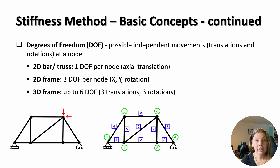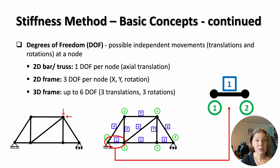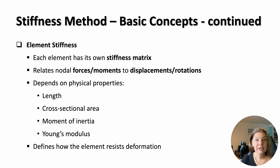Let's see what that means for the truss we saw on the slide earlier. Looking at the element between nodes 1 and 2, element 1 — this is a truss element, so it'll only have forces and displacements in the axial direction. One at node 1 and one at node 2, so two degrees of freedom in total for this element. Each element is represented mathematically by its stiffness matrix. This matrix defines the relationship between nodal displacements and nodal forces or moments. Its form depends on the element's physical properties — length, cross-sectional area, moment of inertia, and the material's Young's modulus. These govern how stiff the element is and how it resists deformation. By calculating each element's stiffness matrix, we can build up the structural behaviour piece by piece.